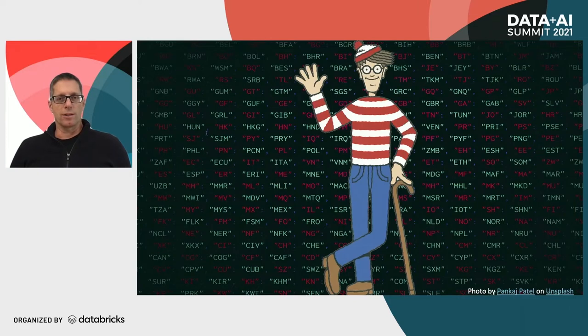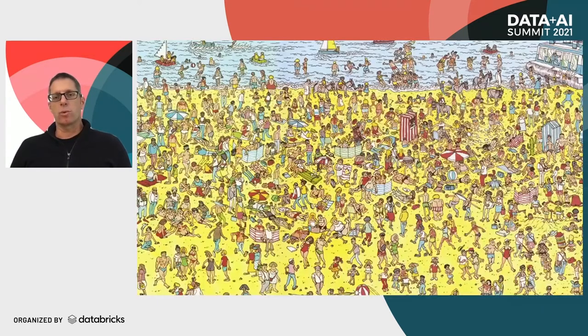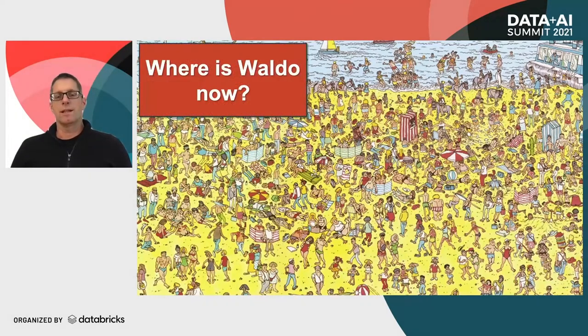Hi everybody. This talk is about anomaly detection at scale. Before we start, I want to talk about a little problem with data. This is Waldo. If I ask you where Waldo is now, it's obviously very easy to find him. But if I ask you where Waldo is now, it's much more difficult — you have to put more work into it and search through a crowd of people.